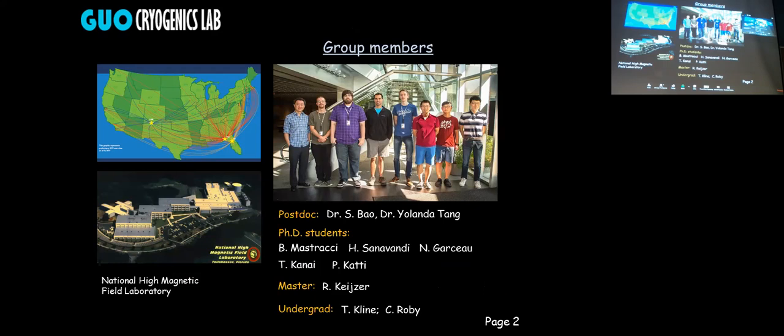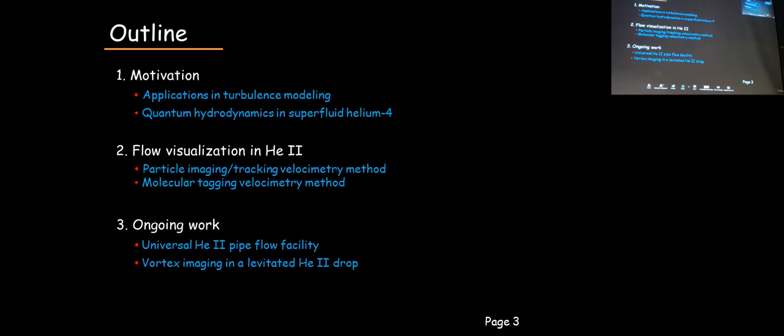Our cryogenics lab is located in Tallahassee, essentially inside the National High Magnetic Field Laboratory. This is a photo of my current group. The work I'm going to present was conducted by some previous students including Jane Gallo, Brian, and some recent students like Amiel from Ladik's group, and also some existing students like Dr. Baal, Intel CLP, and Hamili.